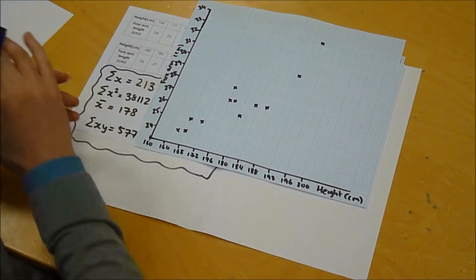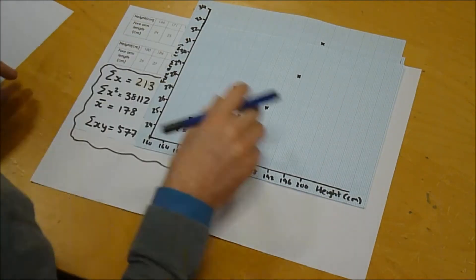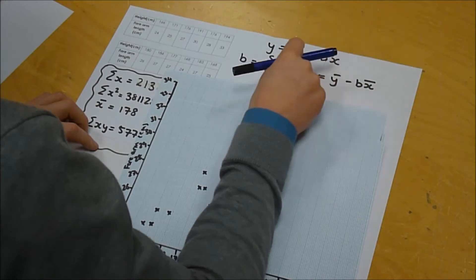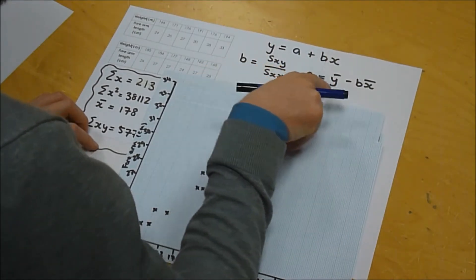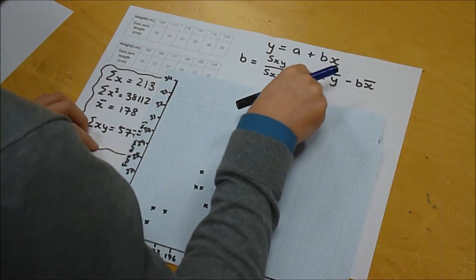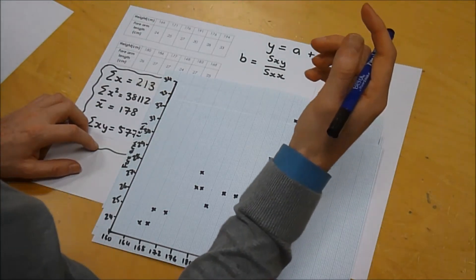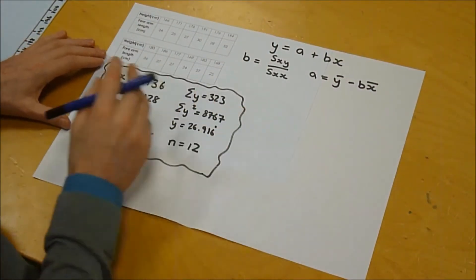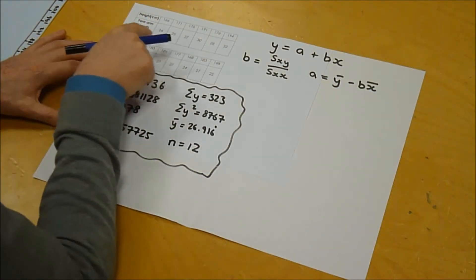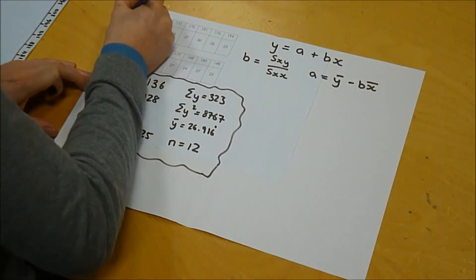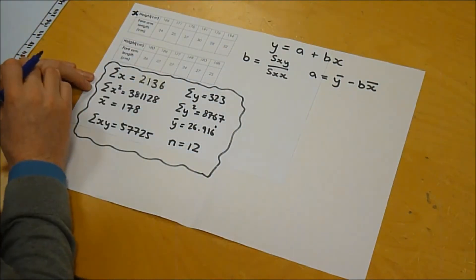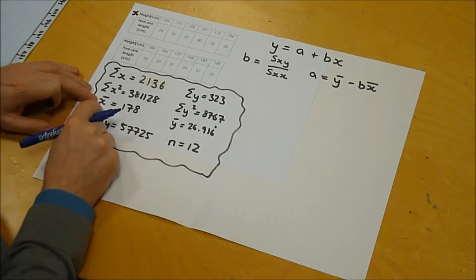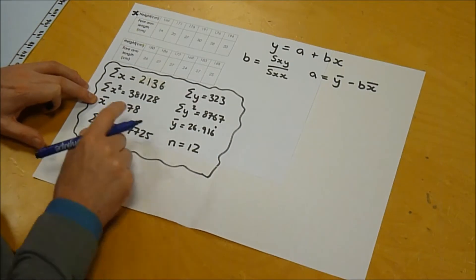Right, so now we've got our scatter graph, we want to come up with our regression line and so that involves doing a lot of calculation. So if we recall, the regression line has the form y equals a plus bx, where a is the y-intercept, b is the gradient, and b is given by s of xy over s of xx, and a is the mean of y minus b times the mean of x. Well, this involves a lot of number crunching, so I've done quite a bit of the hard work for you. The sum of x, which remember x is the height, comes out as 2,136. The sum of x squared is 381,128, and x bar, the mean of x, is 178.